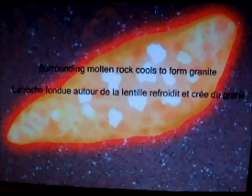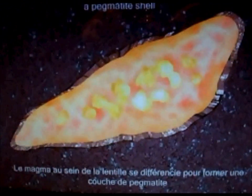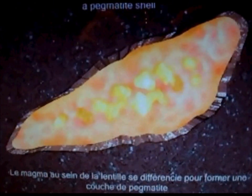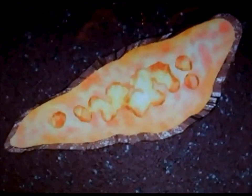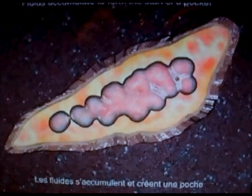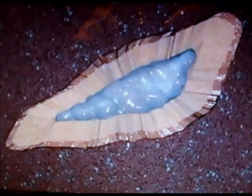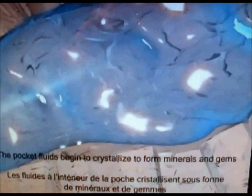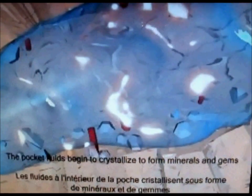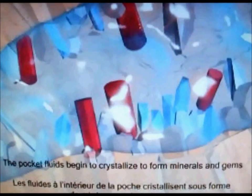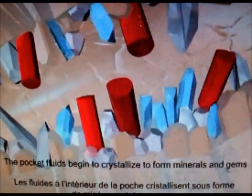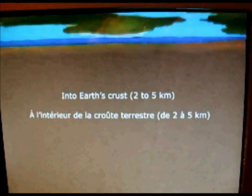Surrounding molten rock cools to form granite. Magma inside the pod starts to differentiate, forming a pegmatite shell. Fluid accumulates to form the start of the pocket. The fluid pocket begins to crystallize to form minerals and gems, and the crystallization process restarts.